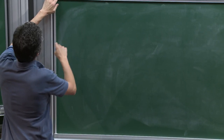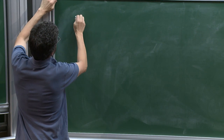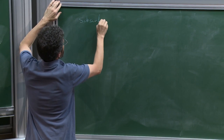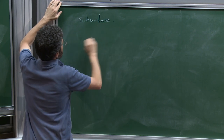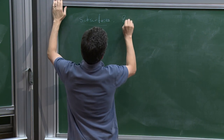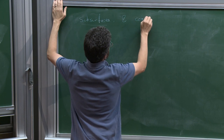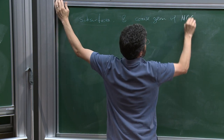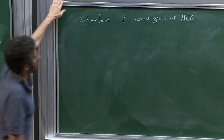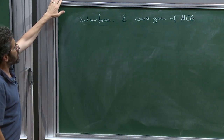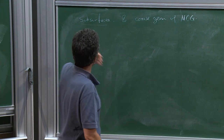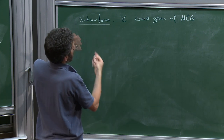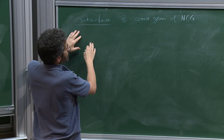I want to talk in the second hour about the kind of subsurface structure and the actual coarse geometry of the mapping class group. Let me just point out this is related to modern versions of a bunch of this structure, which is worth mentioning.